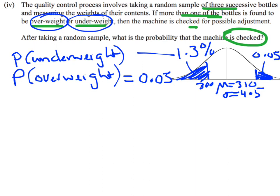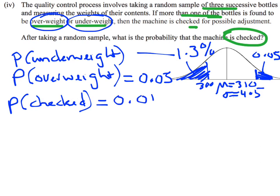So then we can say: what's the probability that the machine needs to be checked? It's going to be checked if a bottle is either underweight or overweight. In probability terms, 'or' means to add. So we take 0.013 and add 0.05, giving a probability of being over or underweight of 0.06313.